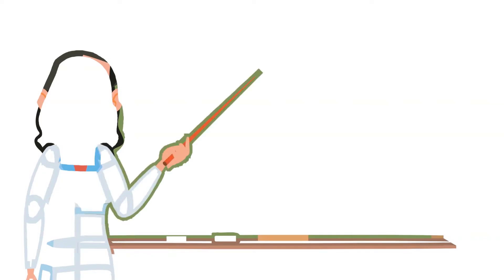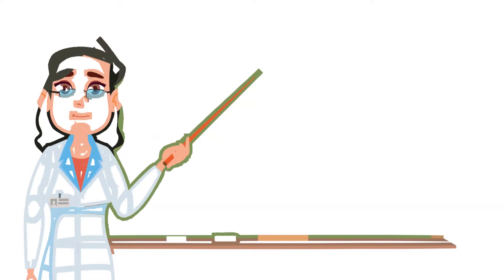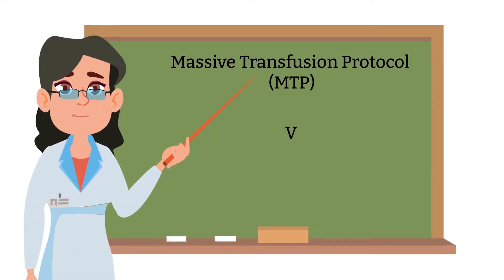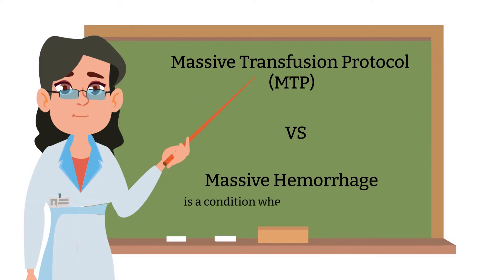I cannot talk about massive transfusion protocol without mentioning massive hemorrhage. Massive hemorrhage is a condition when a patient is bleeding heavily. MTP is a procedure in place for hospital personnel to deal with a massive hemorrhage situation.